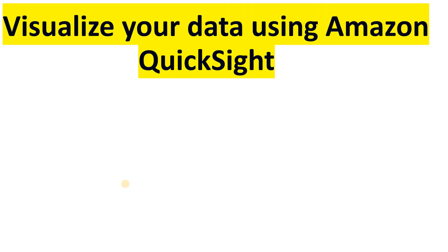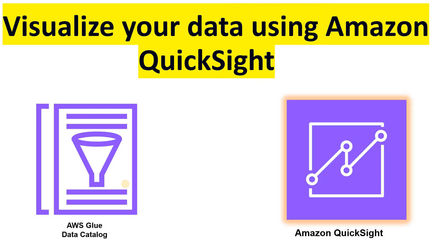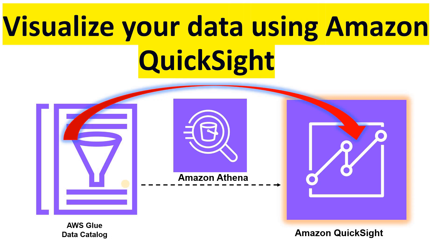Hi, in this video I will show you how to visualize your data using Amazon QuickSight. Here we have our source data kept in the AWS Glue data catalog. We will try to visualize that data into Amazon QuickSight using the Amazon Athena connector from Amazon QuickSight.